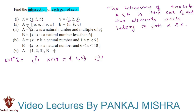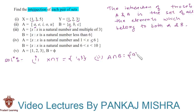In the second section, the only element common to both set A and set B is 'a'. So A intersection B is a set containing element 'a'.